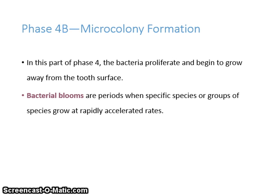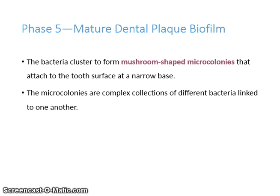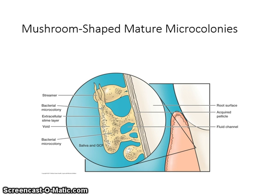Bacterial blooms are periods when specific species or groups of species grow at rapidly accelerated rates. In phase 5, the bacteria cluster to form mushroom-shaped colonies that attach to the tooth surface at a narrow base. The microcolonies are complex collections of different bacteria linked to one another. The bacteria in a biofilm are not distributed evenly. Each microcolony is a tiny independent community containing thousands of compatible bacteria.